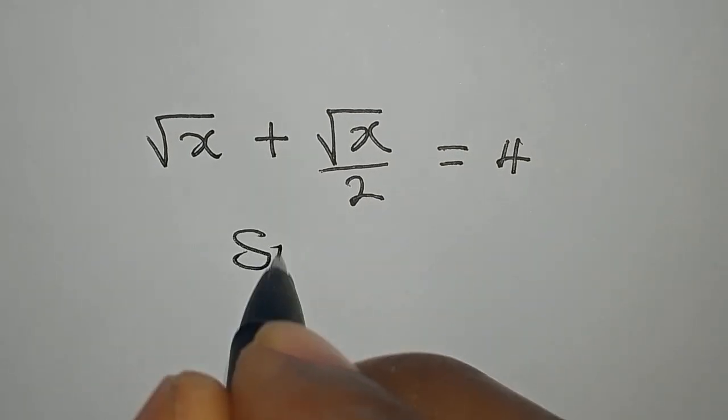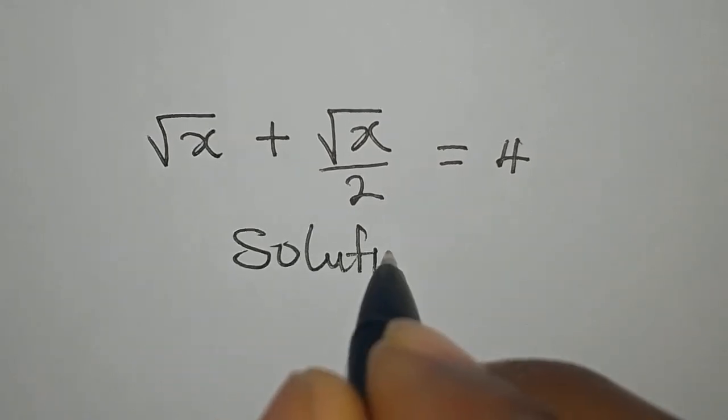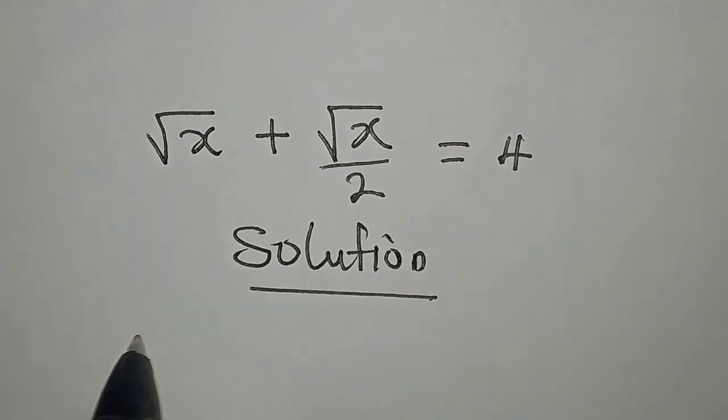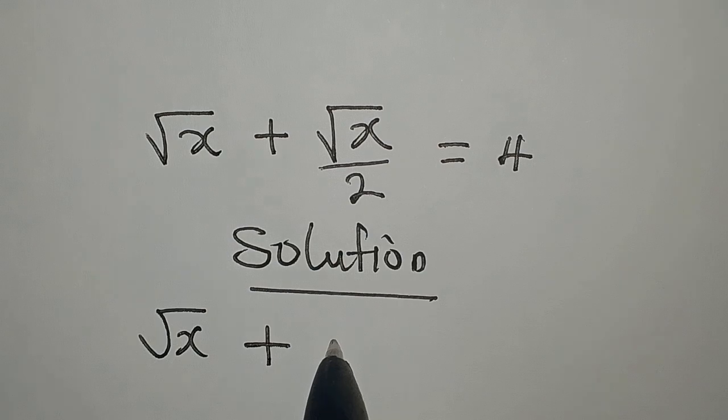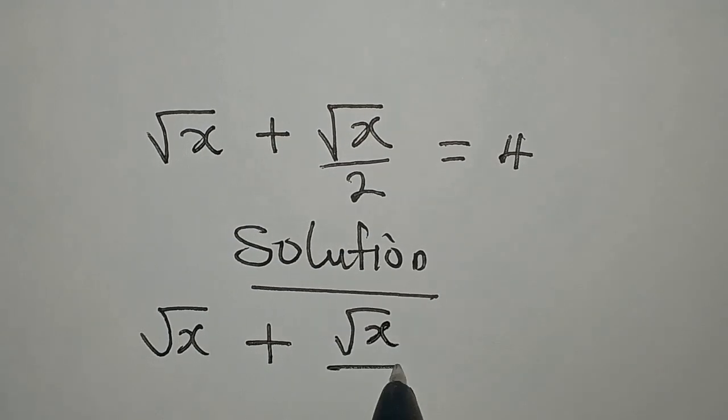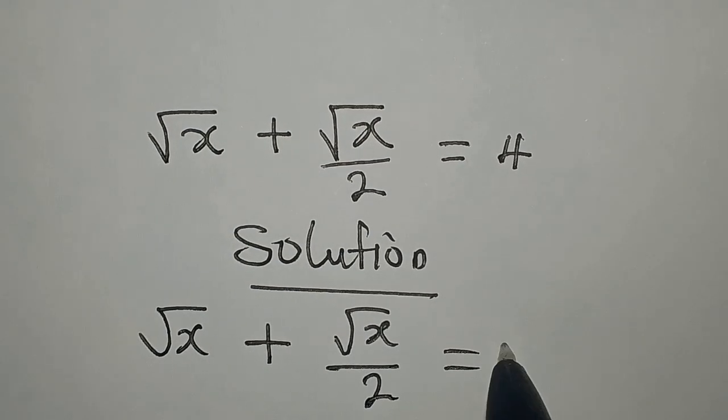Hello everyone, let's provide the solution to this square root of x plus square root of x over 2 equals 4.